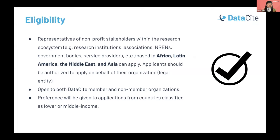To apply, it's required that you represent a nonprofit organization within the research ecosystem — this can be a university, a research institute, an association, an NREN, or a service provider. It needs to have a nonprofit status and be based within Africa, Latin America, the Middle East, or Asia. If you're applying on behalf of your organization, you should have the authority to do so. This fund is open to both current DataSite members and organizations that are not yet members.